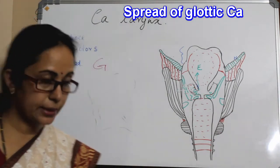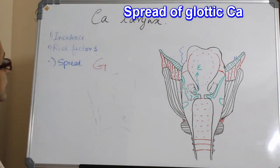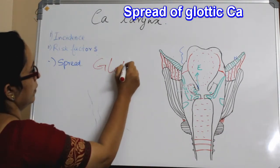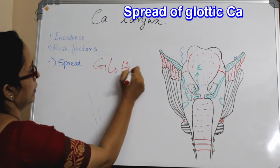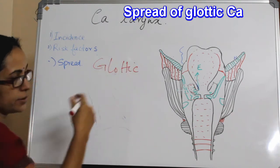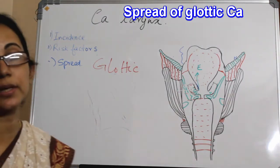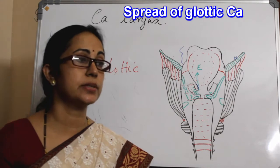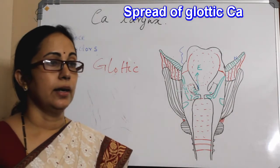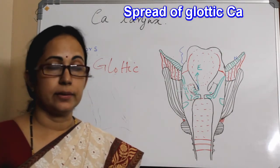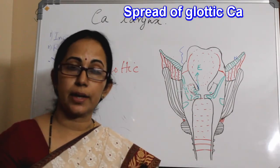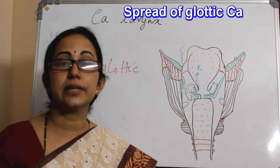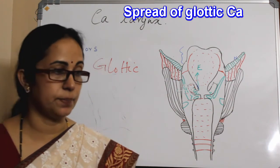Coming to the glottic lesions. These glottic tumors are a heterogeneous group of tumors ranging from keratosis with various degrees of atypia.